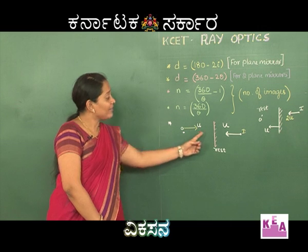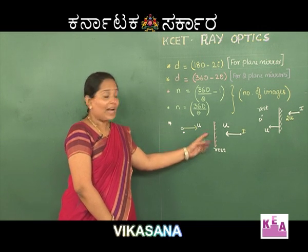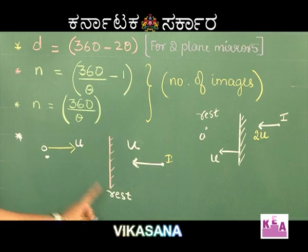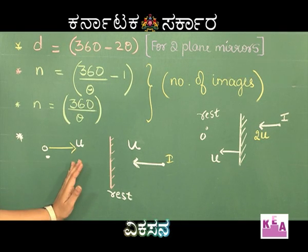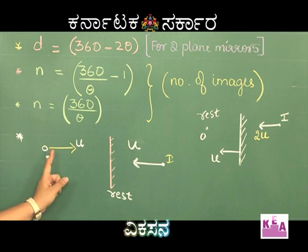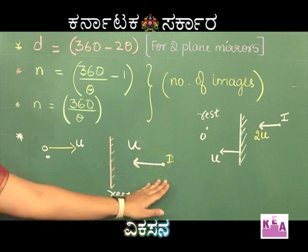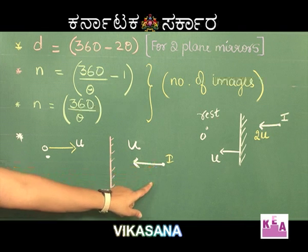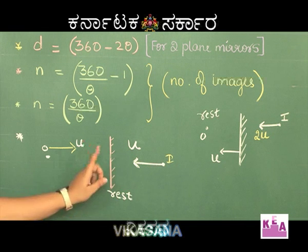Now I have an interesting concept: where a plane mirror is placed at rest and an object is moving towards the plane mirror with a speed u, the image is formed behind the mirror and will also move towards the plane mirror with a velocity u.